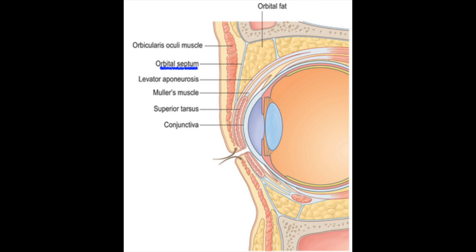In the case of the eyelid, the septum is the main barrier layer. This is a membranous connective tissue layer which separates the anterior part of the eyelid from the posterior part. If the infection is anterior to the septum, which means it only involves the skin and the subcutaneous tissue, it is called preseptal cellulitis. On the contrary, if the infection has breached the septum barrier and entered into the postseptal space, it is called orbital cellulitis.